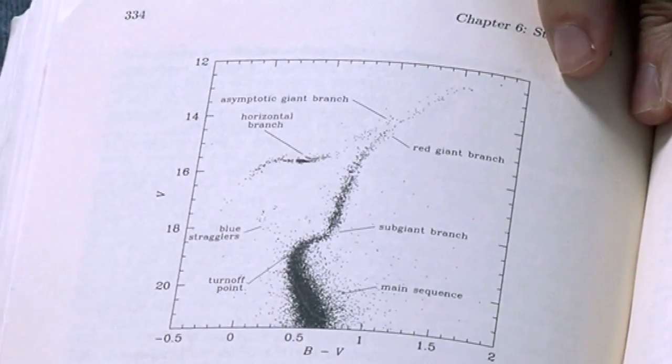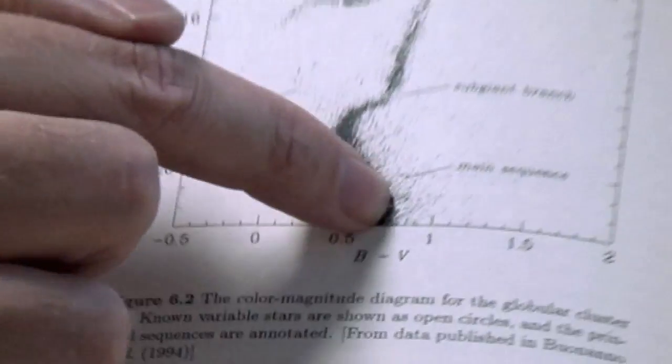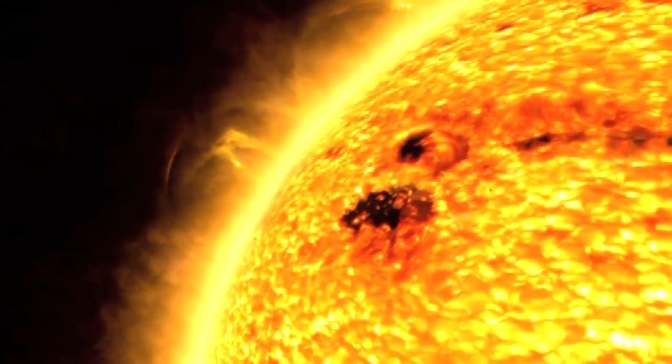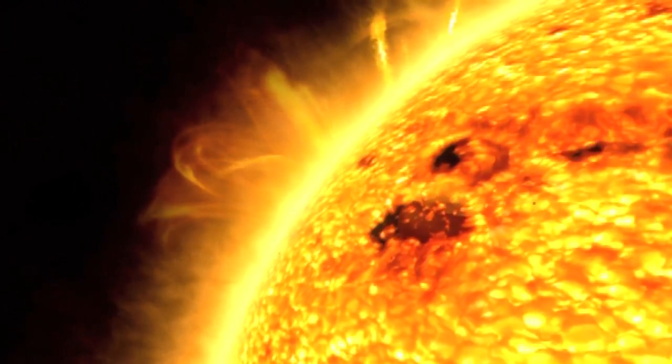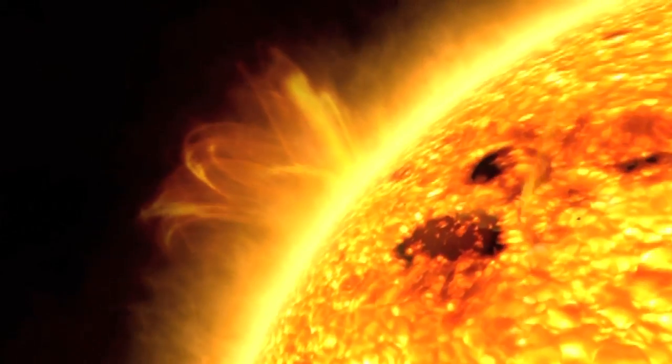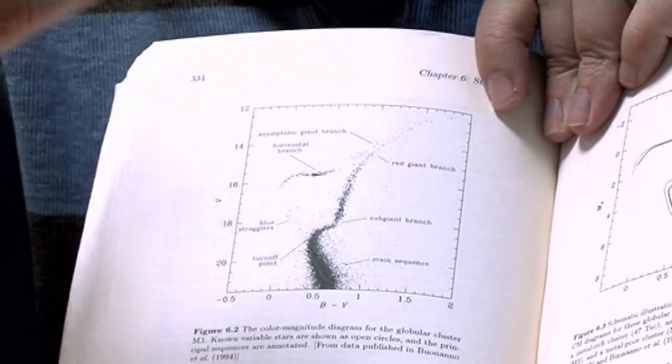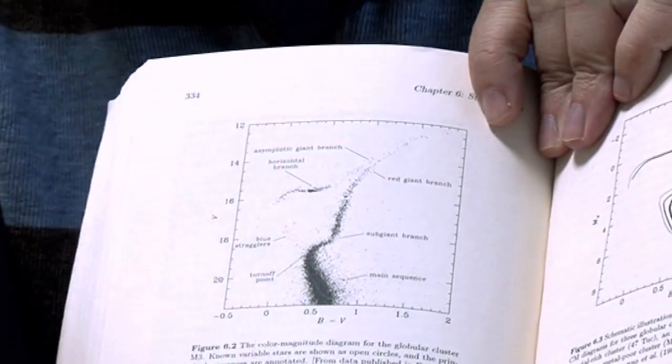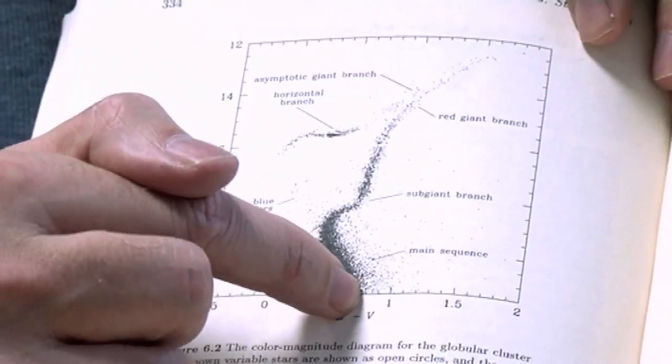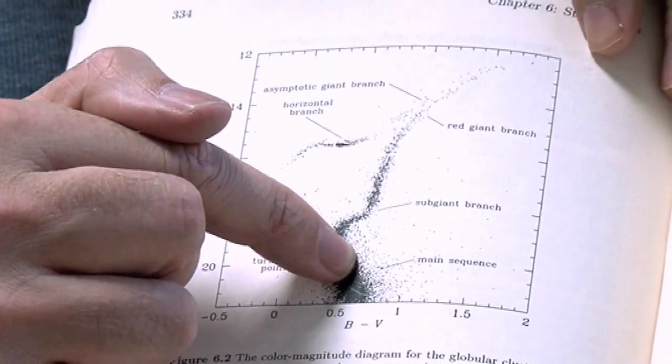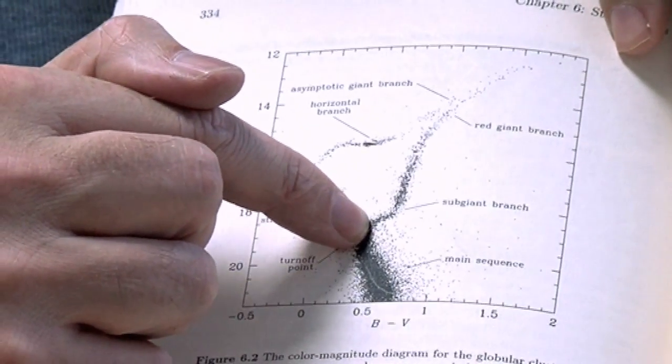For example, we know that stars down here are on a thing known as the main sequence, and stars on the main sequence are stars that are like the sun that are currently turning hydrogen into helium in their cores. And as you go further up, you see some of the more advanced stages of evolution where a star might be turning helium into carbon or carbon into heavier elements within its core. The least massive stars are at the bottom here, and as you work your way up the main sequence, you get more and more massive stars.